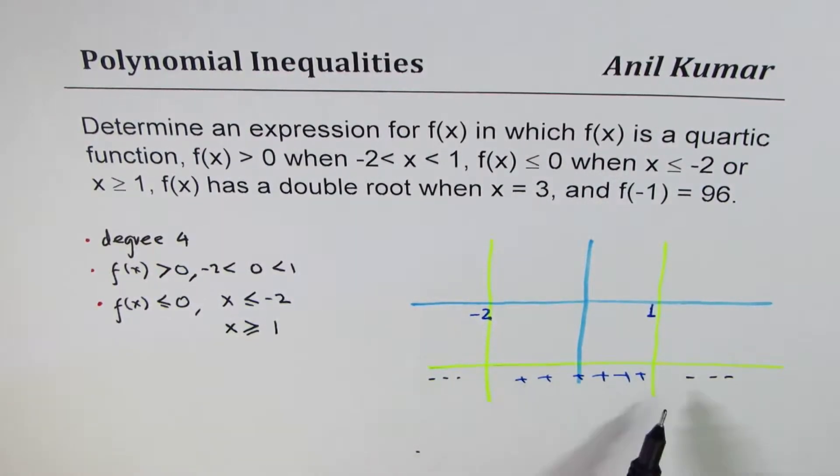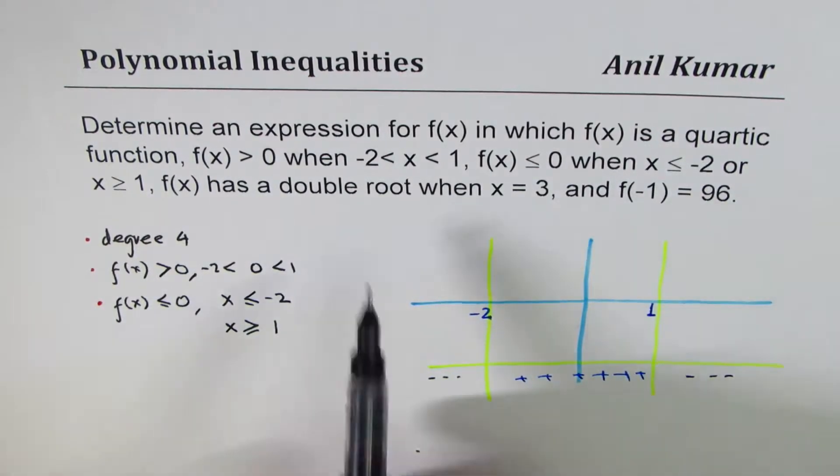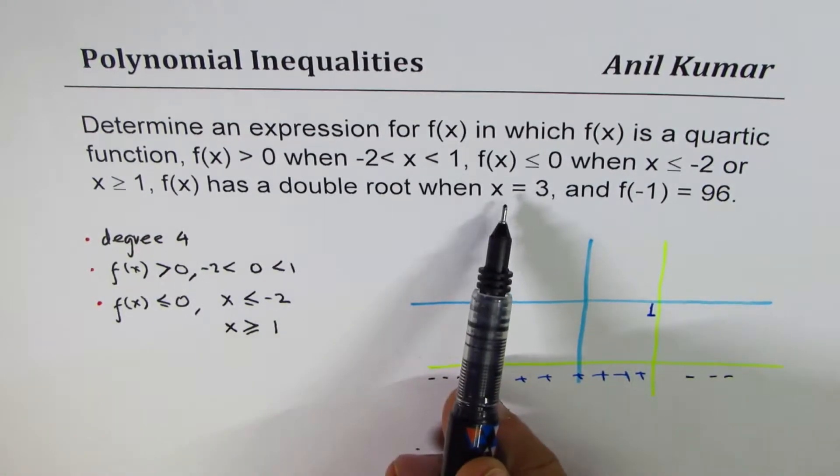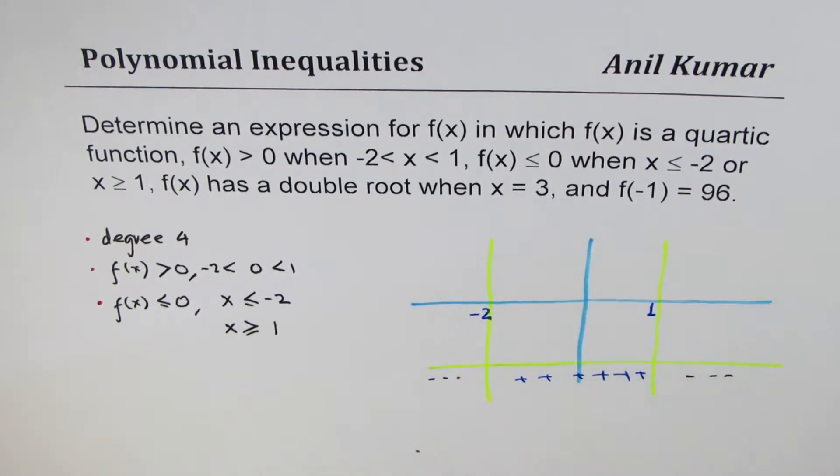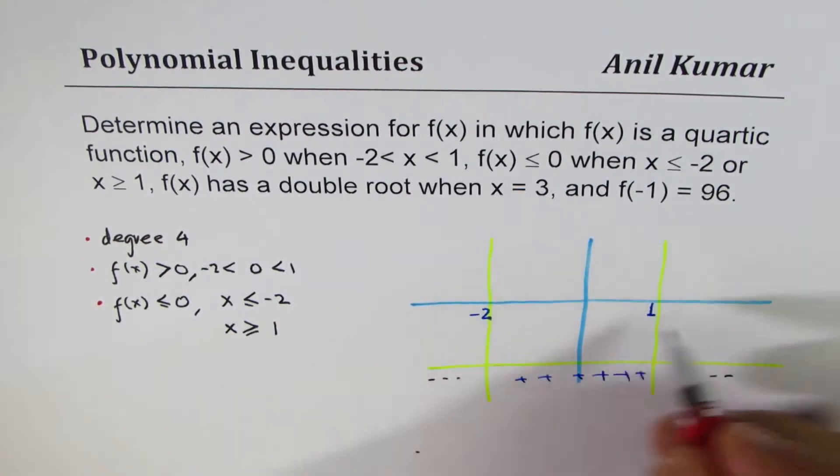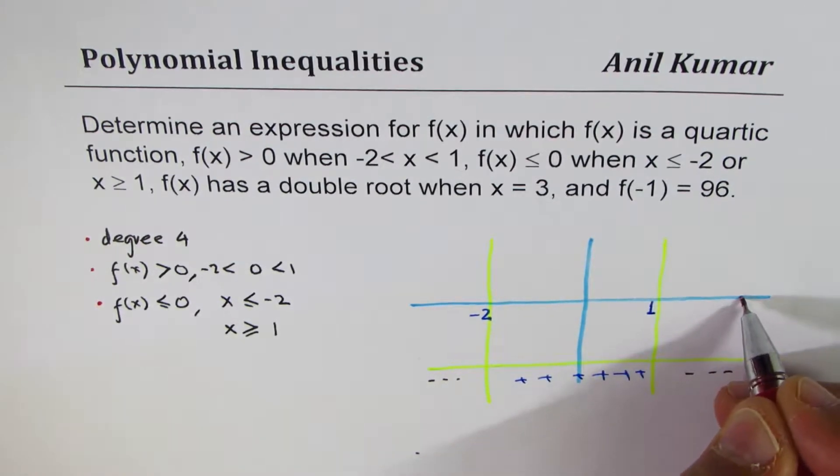So, we have a quartic function kind of like this. We are also given that it has a double root at 3. So, let's say somewhere here, it doesn't look like to the scale. So, let's say this is 3 for us.